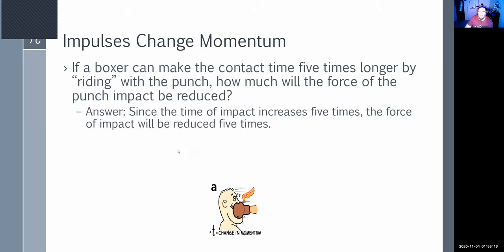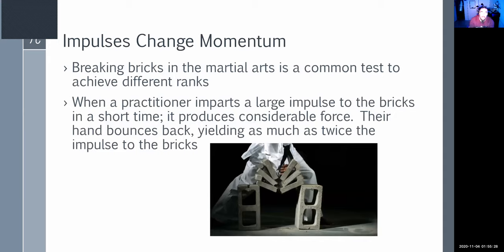A boxer can make contact five times longer by rolling with a punch — this reduces the force by five times. We increase the time by five, so the force is reduced by five. That's the idea: same impulse, but spread over more time.